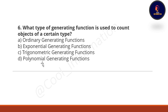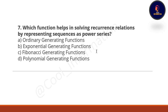Next question: what type of generating function is used to count objects of a certain type? Options are ordinary generating function, exponential generating function, trigonometric generating function, and polynomial generating function. The correct option is option A — ordinary generating functions.